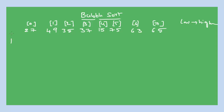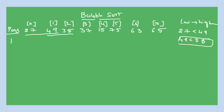In the first pass — which is the first iteration — first compare a[0] with a[1], that is 27 and 49. Since 27 is less than 49, the condition is true, so no swap. Next, compare a[1] and a[2], that is 49 and 35. The condition is false, so we exchange these two values. Now 35 goes to position a[1] and 49 goes to a[2]. After this swap, the array becomes: 27, 35, 49, 37, 15, 75, 63, 65.